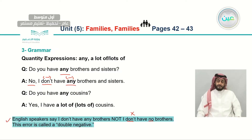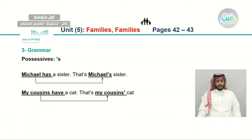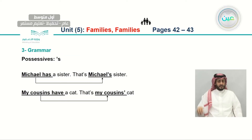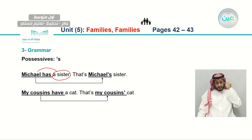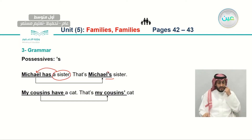Let's see the next question. Do you have any cousins? Yes, I have a lot of, or lots of, cousins — meaning probably more than one. Now let's look at possessives — the thing that you own or that is related to you. Michael has a sister. He has a sister. If I want to say the sister belongs to Michael, I add the possessive adjective followed by 's' and then the family member: that's Michael's sister.